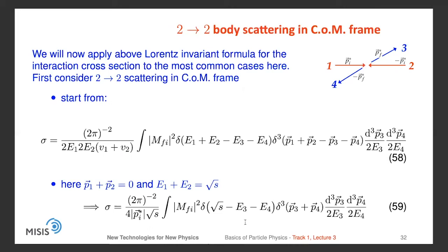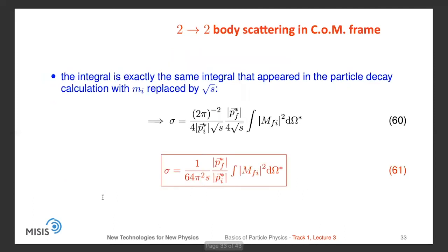Now we apply the Lorentz-invariant formula for the interaction cross-section to the most common cases. First we consider 2→2 body scattering in the center-of-mass frame, where two incident particles 1 and 2 go with momenta p_i and −p_i, and scatter to particles 3 and 4 with equal and opposite momenta. Starting with the general expression, remembering that p₁ + p₂ = 0 and E₁ + E₂ = √s, the expression simplifies. This integral is exactly the same as the one in the particle decay calculation, with the only difference that the mass of the initial particle is replaced by √s.